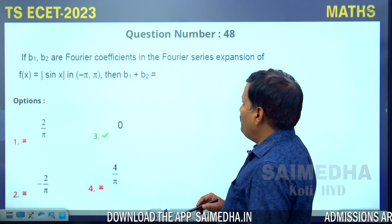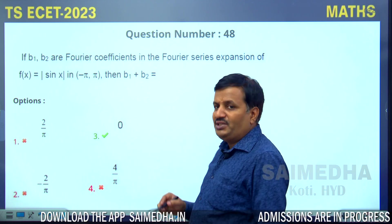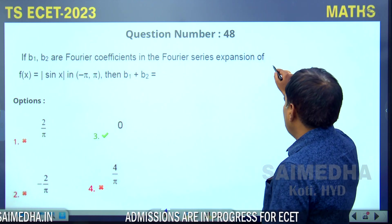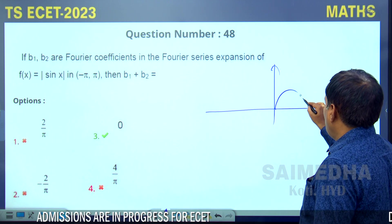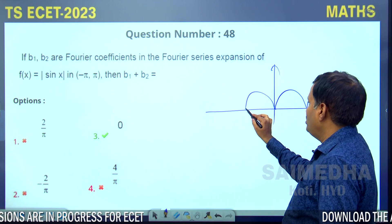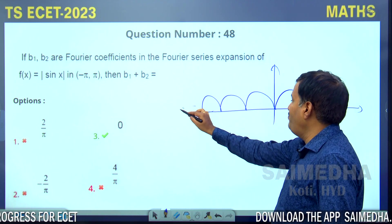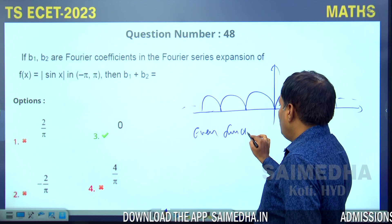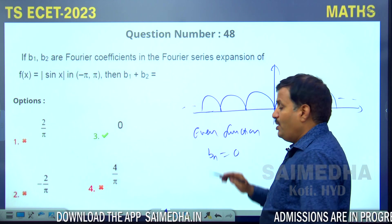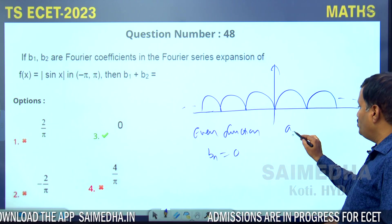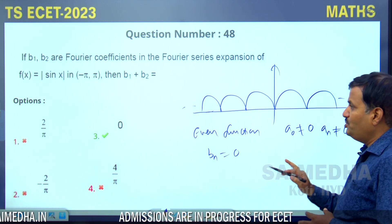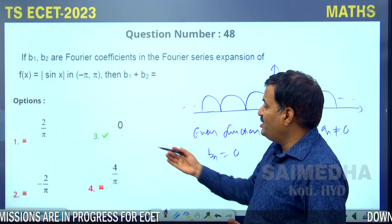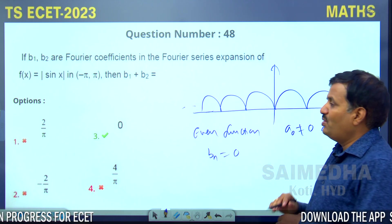If b₁, b₂ are Fourier coefficients of f(x) = |sinx| on [-π, π]: |sinx| is an even function. For even functions, bₙ = 0 for all n. Therefore b₁ = 0 and b₂ = 0, so b₁ + b₂ = 0. Option 3 is correct.